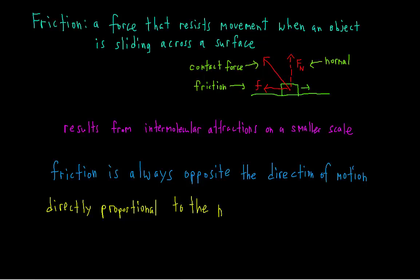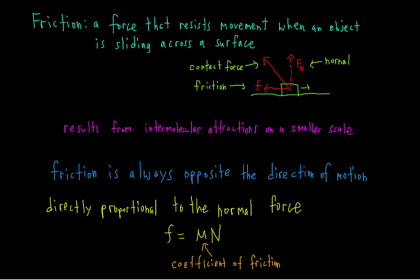Friction is directly proportional to the normal force. This makes sense if you think of the normal force and friction as two parts of the same contact force — if one component is larger, the other should be larger as well. The constant of proportionality in this relationship between the friction force and the normal force is called the coefficient of friction, denoted by the letter mu. The coefficient of friction is a dimensionless number — it doesn't have any units.